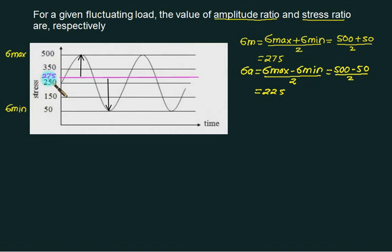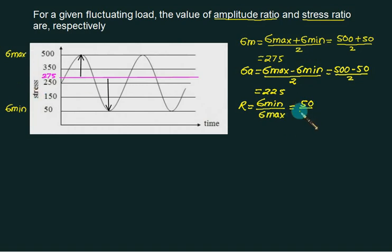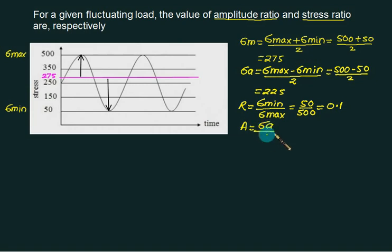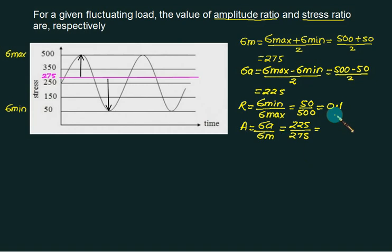Confirming: 500 minus 275 equals 225, and 275 minus 50 equals 225. So the amplitude is 225. Now, the stress ratio r equals sigma minimum divided by sigma max, which is 50 divided by 500, giving positive 0.1. The amplitude ratio uses the letter A and equals sigma amplitude divided by sigma mean, which is 225 divided by 275, giving approximately 0.818.